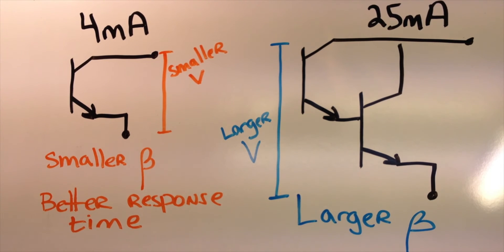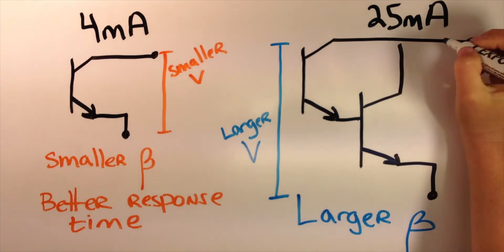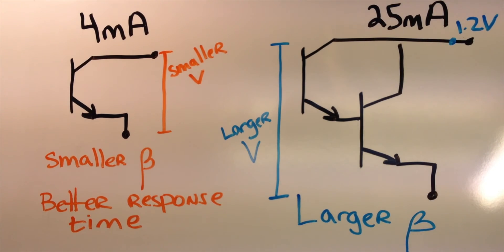Second, the 25mA sinking configuration may drive the voltage only as low as 1.2 volts when the Darlington pair is saturated. This may be a concern for applications using the output for logic signaling.